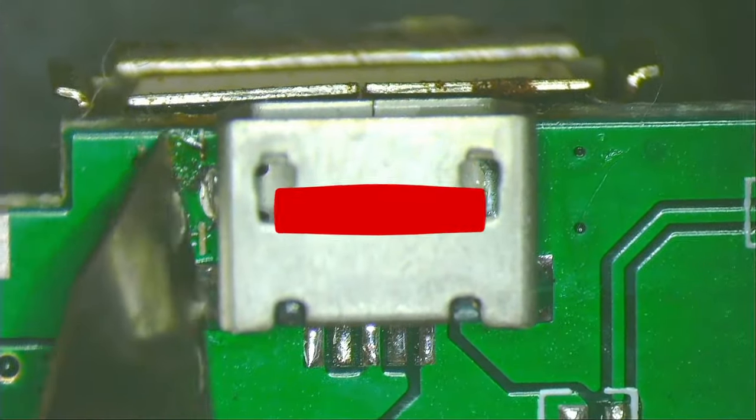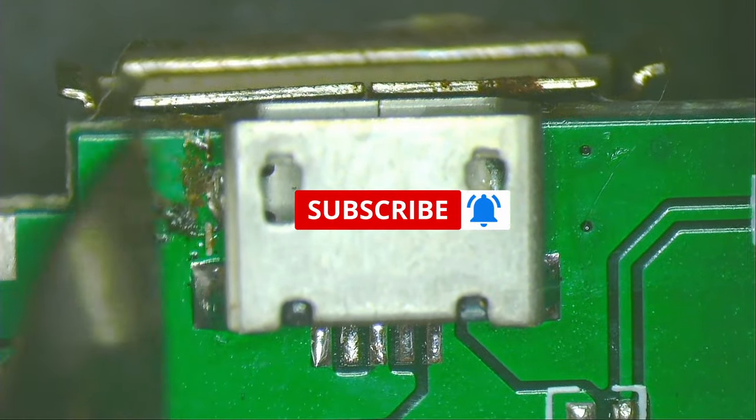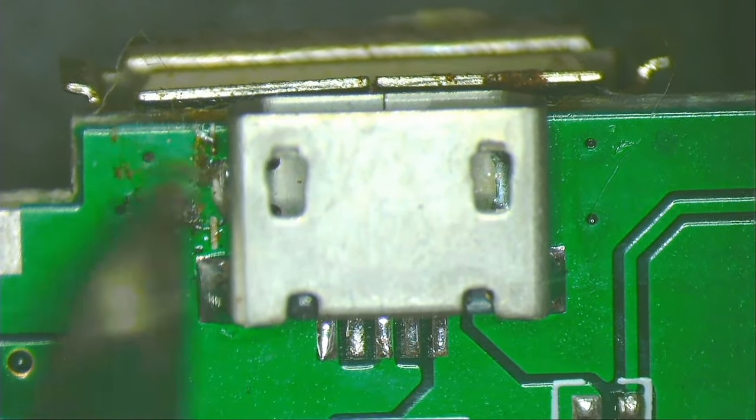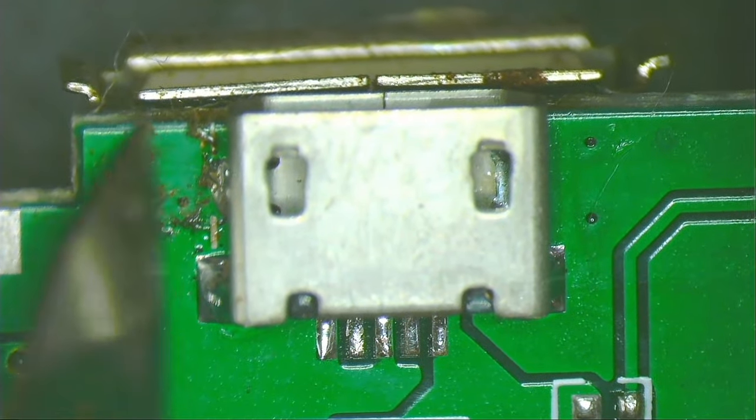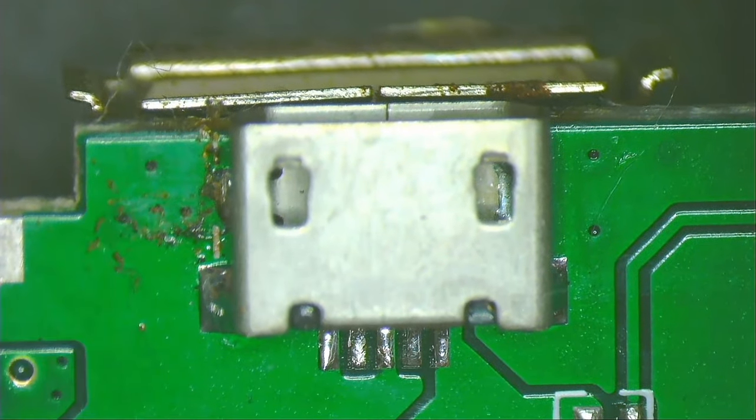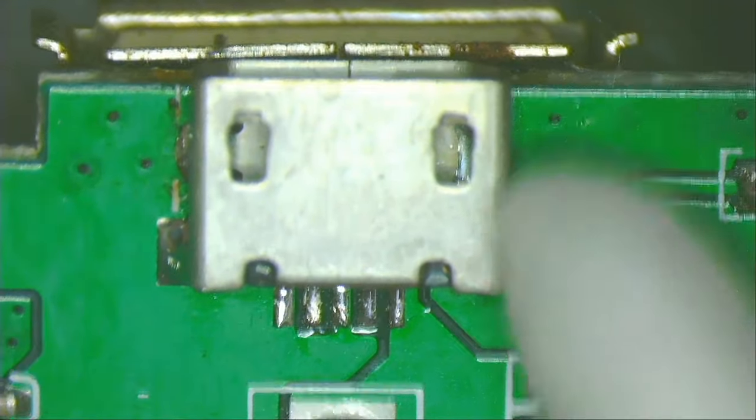To clean it, I scrape it a little with a scalpel. I don't use much force because I don't want to scrape the green mask that covers the board. I clean the area with a cotton swab soaked in isopropyl alcohol.